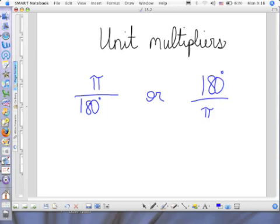Now, the way we determine which one to use is what are we trying to get out of and what are we trying to get into. Because remember, one pi and 180 degrees is the same thing. So, this ultimately has a value of one.